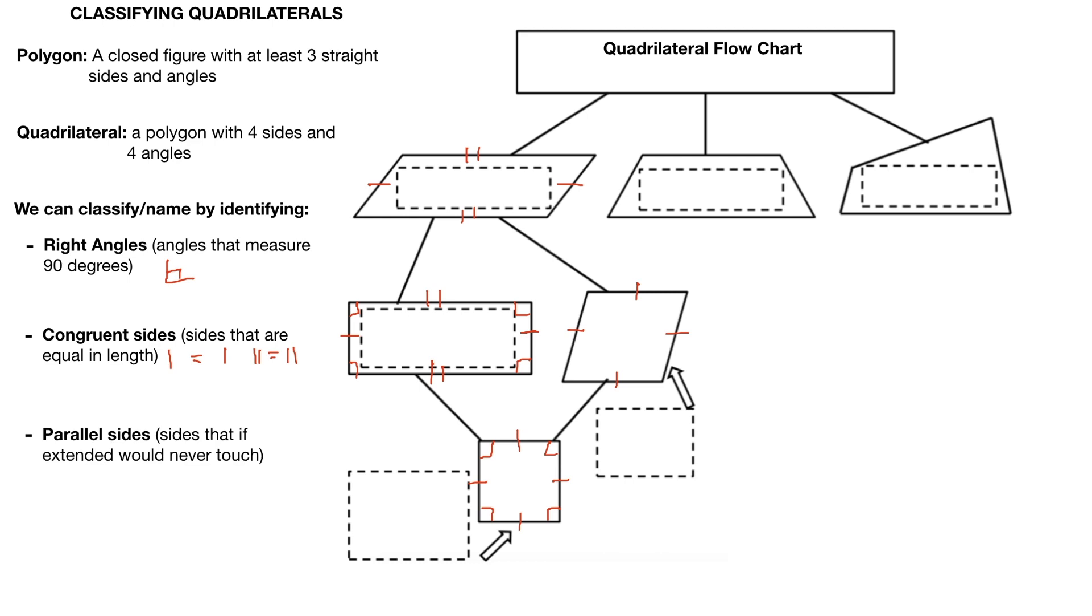Next and final thing we're going to be looking for is parallel sides. Parallel means that if the sides were extended, they would never touch each other. So to give an example, we see these two arrows. If we kept these arrows going on forever, they would never end up touching each other. So those are called parallel sides. Now we use little arrows similar to those in math to indicate that sides are parallel.